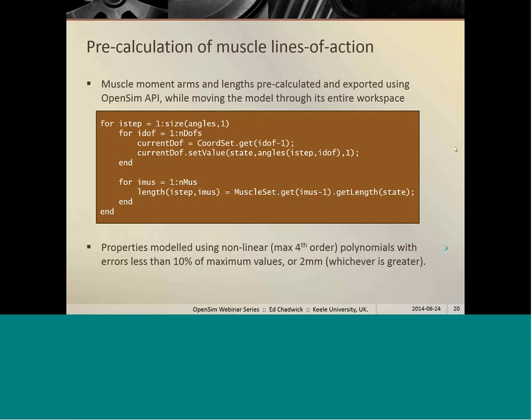So in order to do that, I just wanted to show you this example of how we use OpenSim for that as well. Now we use the OpenSim API for this rather than the graphical user interface, the application programming interface. And that allows us to get moment arms and muscle lengths out of OpenSim programmatically, so we can batch process every single position of the model in the workspace in one go and extract the parameters of muscle length and moment arms. That particular part does take a couple of hours to run, but that's obviously only done once before we actually start simulating the model.